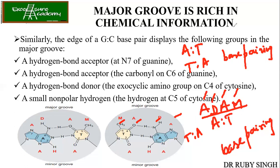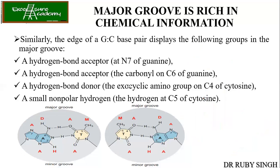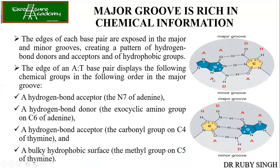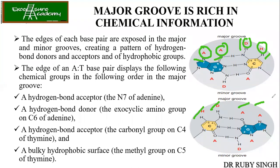Similarly, in the case of G-C base pairing, the major groove shows A, A, D, H — and for C-G base pairing it is H, D, A, A. So you can distinguish between G-C and C-G pairings as well. The C6 exocyclic amino group — meaning outside the ring — is present. If you remember ADAM and MADA for A-T and T-A, and AADH and HDAA for G-C and C-G, you have the chemical information of the major groove.